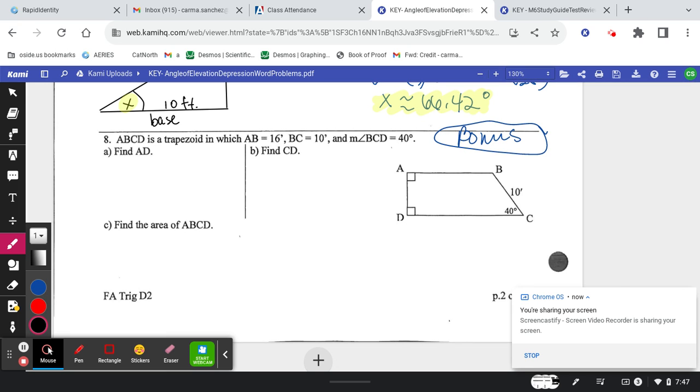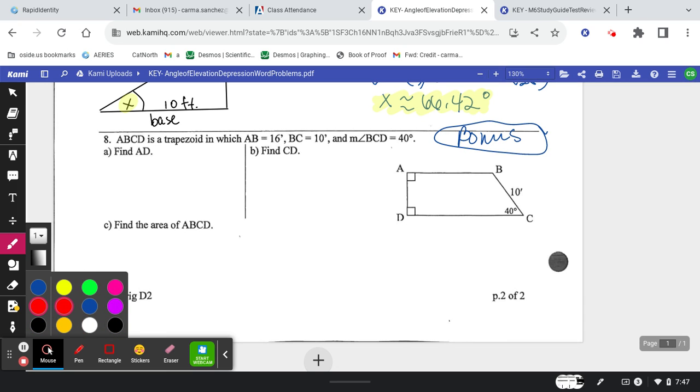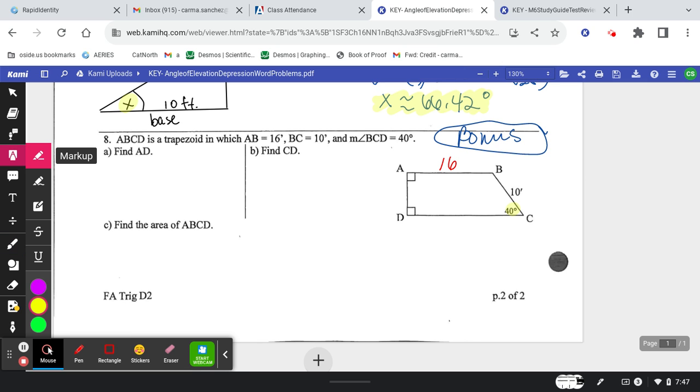All right, this is the bonus question on homework. ABCD is a trapezoid in which AB equals 16, so go ahead and mark AB equal to 16, and then BC is 10, that's already marked, and the measure of angle BCD is 40, that's already marked. So you can see these two here already have their markings.